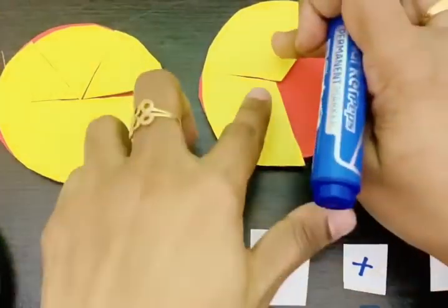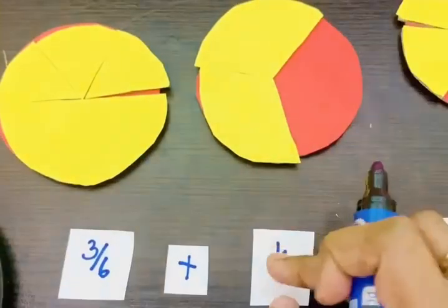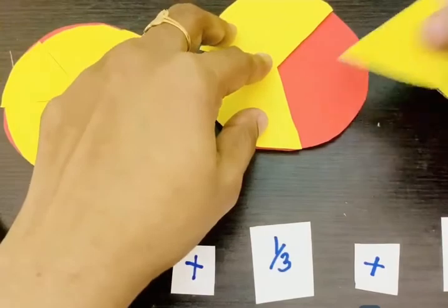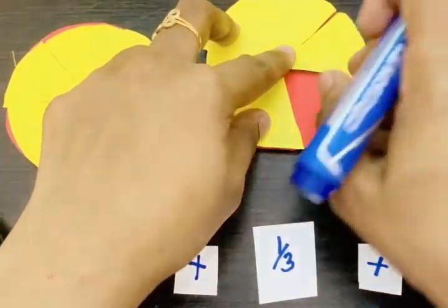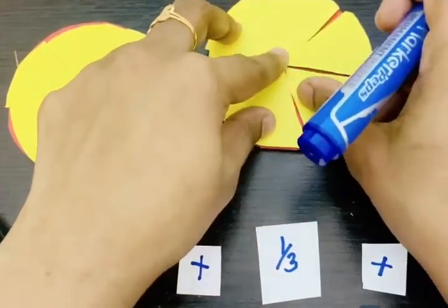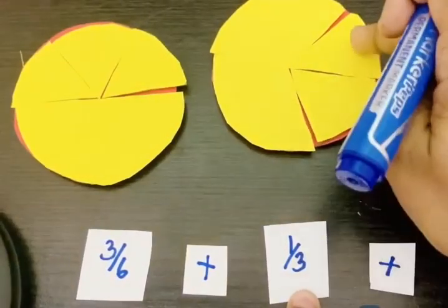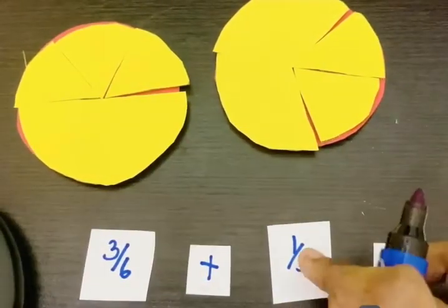For 1 by 3, the equivalent fraction is... let us check. Instead of 1 by 3, we can write it as 2 by 6.